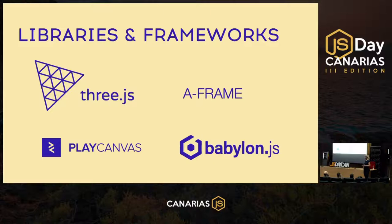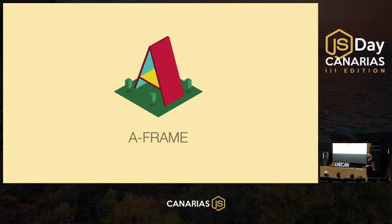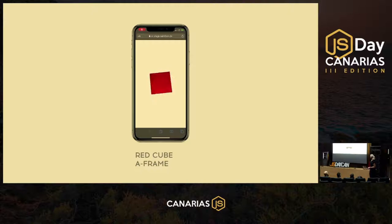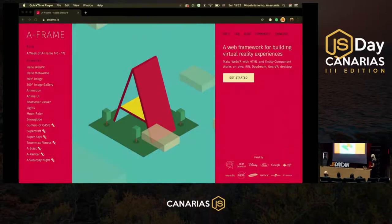My colleague Sonia will talk about Three.js later. A-Frame is an open source library created for developing virtual reality on the web. It uses an entity component system like HTML and it's really easy to develop. I'll show you how to create the basic red spinning cube demo — it's my favorite.